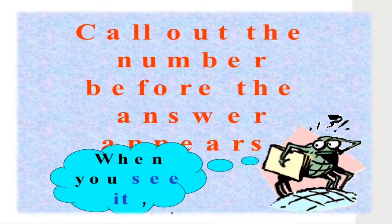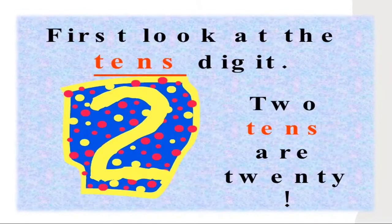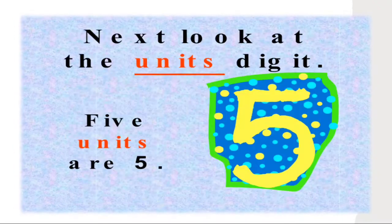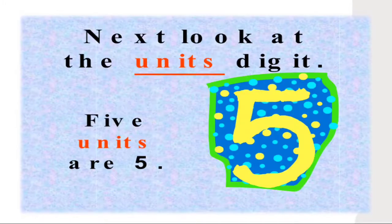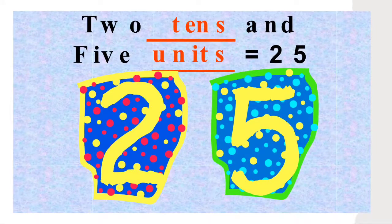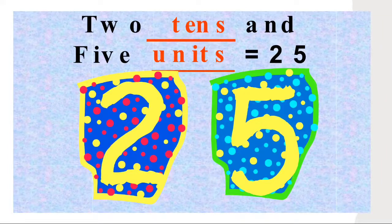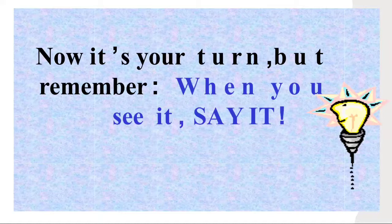Now I have here some examples for you to really understand. For example, look at the tens digit: two tens are 20. Very good. How about next? Look at the units digit: five units are five ones, right? So two tens and five units or ones is equal to 25.